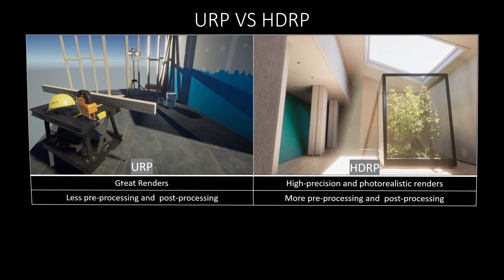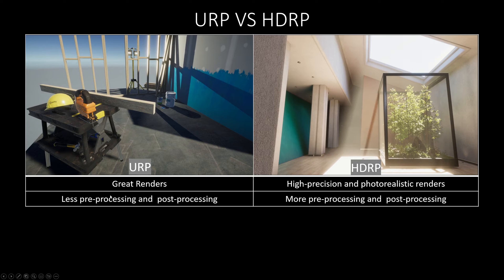The URP has less advanced physical-based lighting, shaders, materials, and post-processing effects compared to the HDRP. On the other hand, the HDRP has more advanced physical-based lighting, shaders, materials, and post-processing effects compared to the URP.